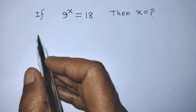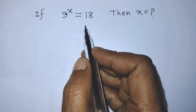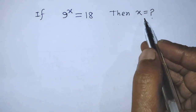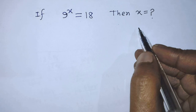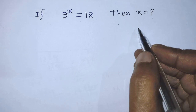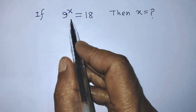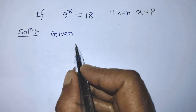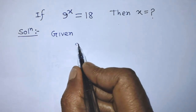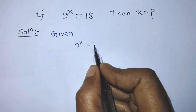Hello guys, you are welcome to solve this math problem: if 9 to the power x is equal to 18, then find the value of x. Today in this video I am telling you how to find the value of x from the given equation 9 to the power x is equal to 18. Our given equation is 9 to the power x is equal to 18.